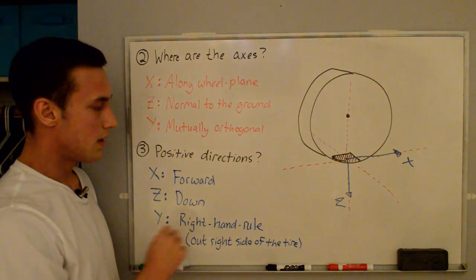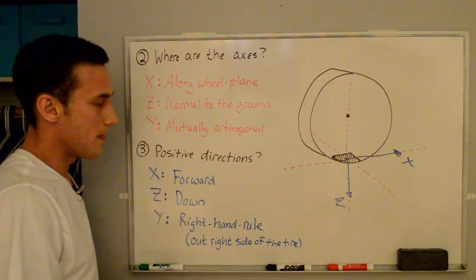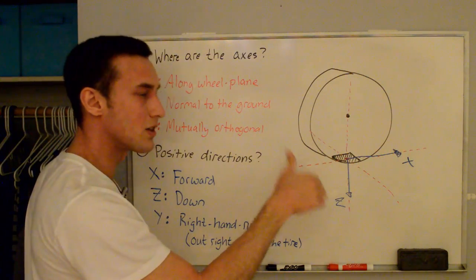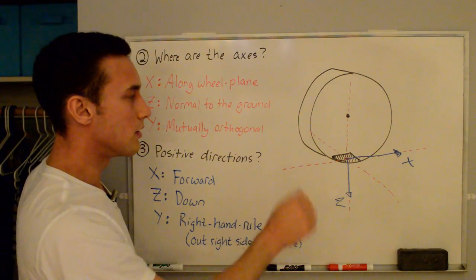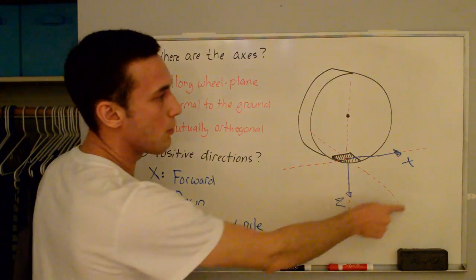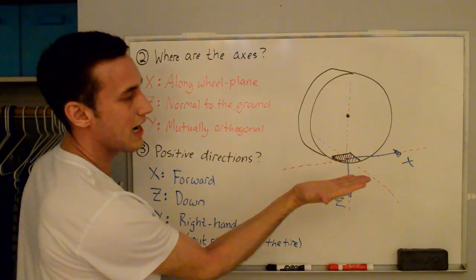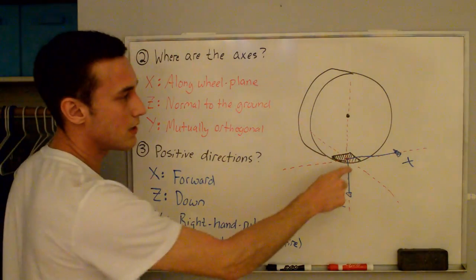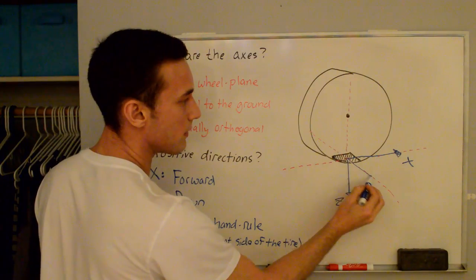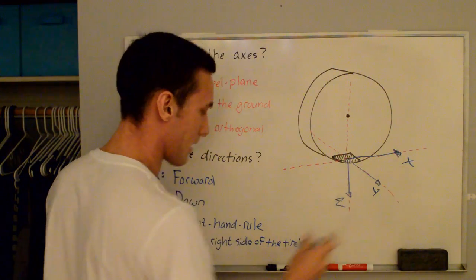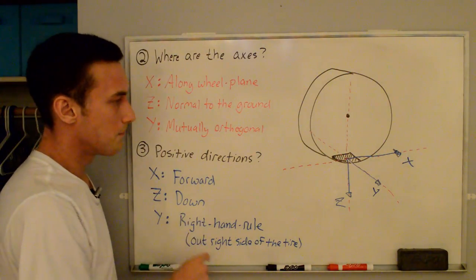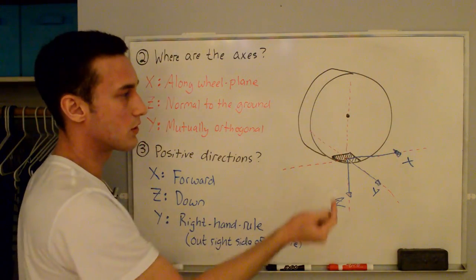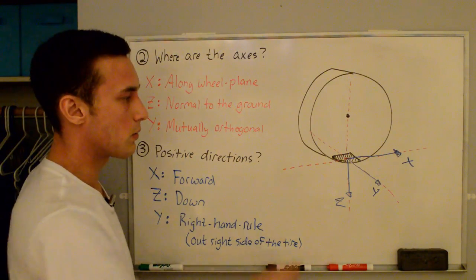The Y axis is determined from the right-hand rule. Usually you push the X axis to the Y axis and your thumb points in the direction of Z. Here we push the Z axis to the X axis and our thumb gives the positive Y direction. So if we push Z to X, my thumb points out of the page — that's our positive Y axis. And you can see that if Z were pointing up instead of down, the Y axis would switch to point into the page, which is why those two axes differ between SAE and ISO.